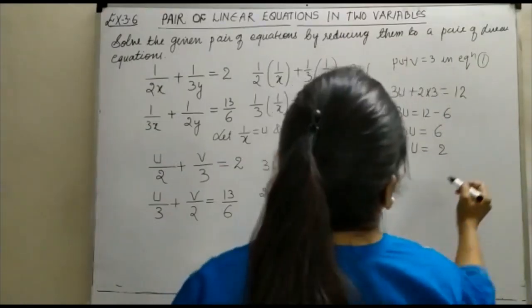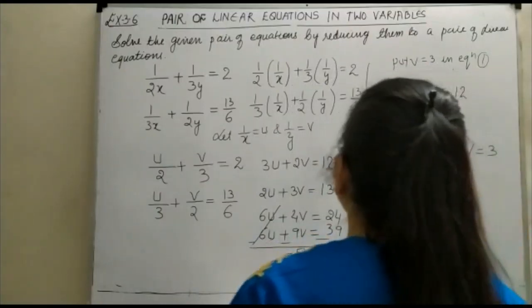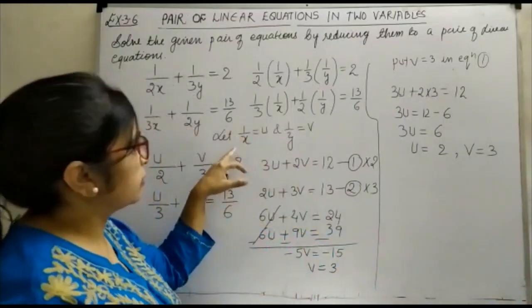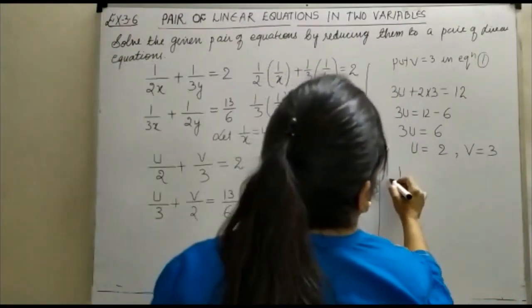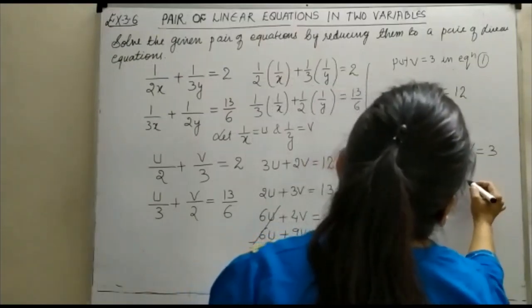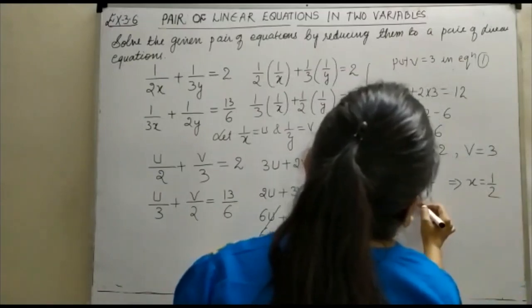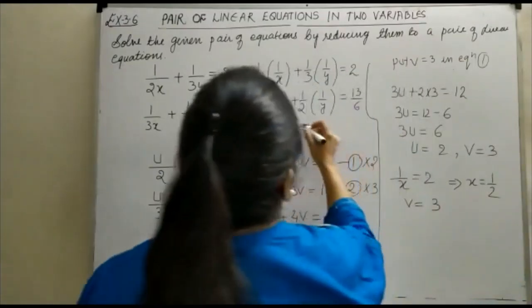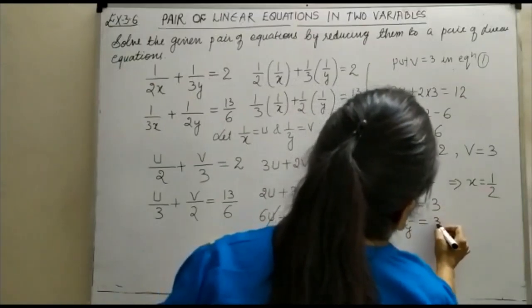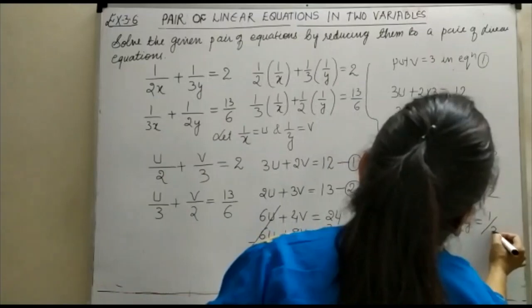So we got u is equal to 2 and v is equal to 3. You can see here, u is 1 upon x, so keep here 1 upon x is equal to 2 implies x is equal to half. Similarly, v is equal to 3, v is related with 1 upon y, 1 upon y is equal to 3 implies y is equal to 1 upon 3.